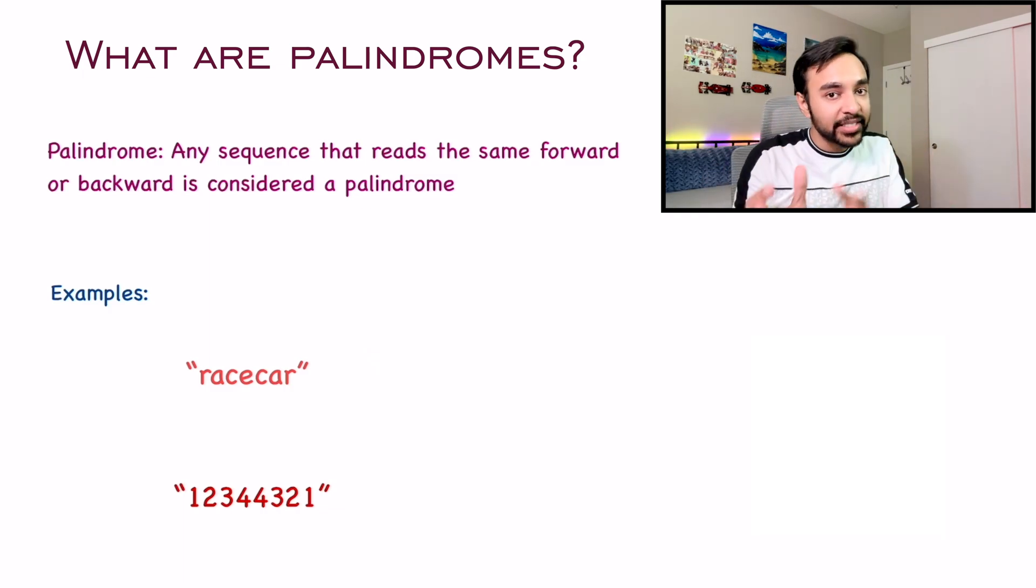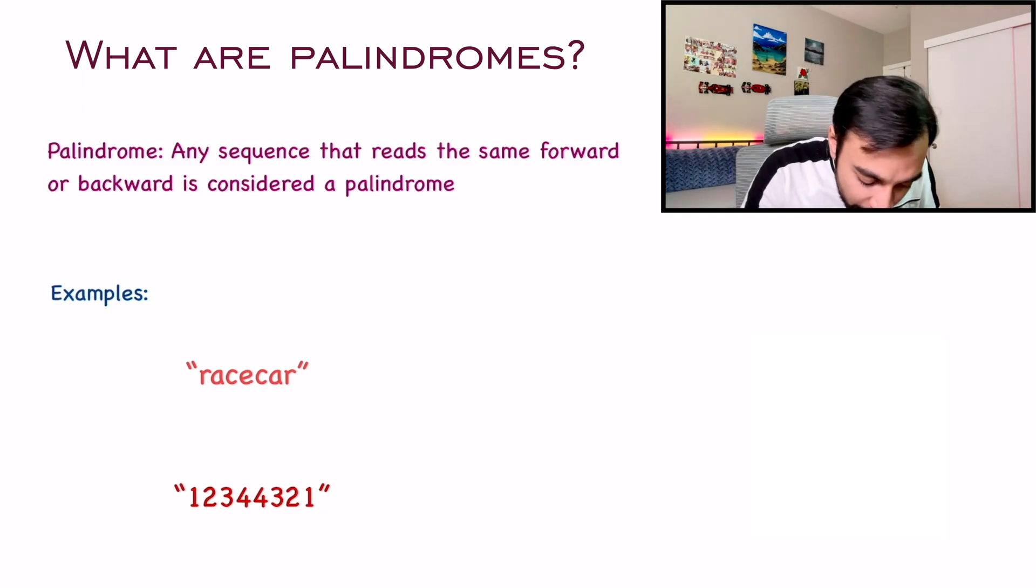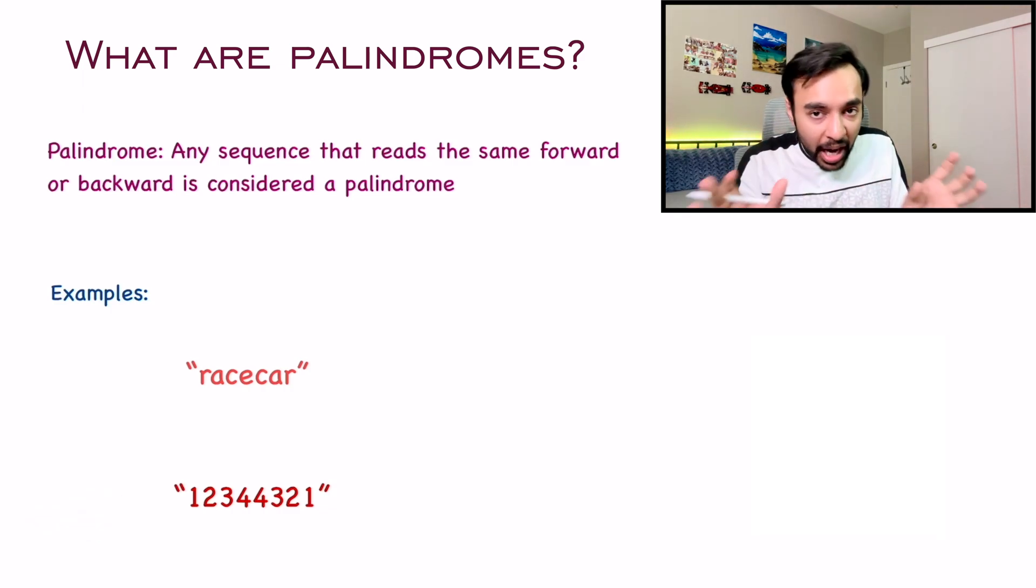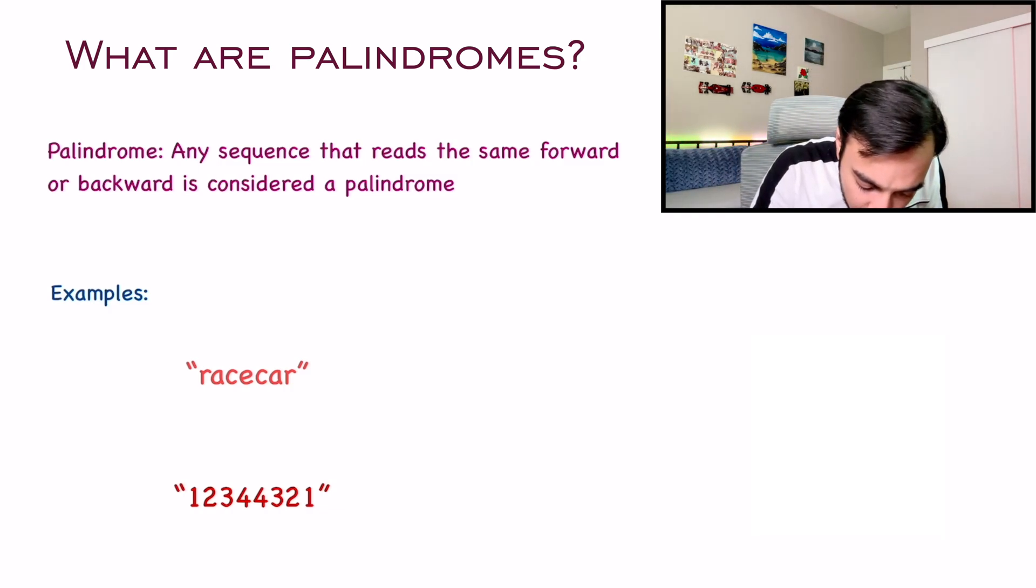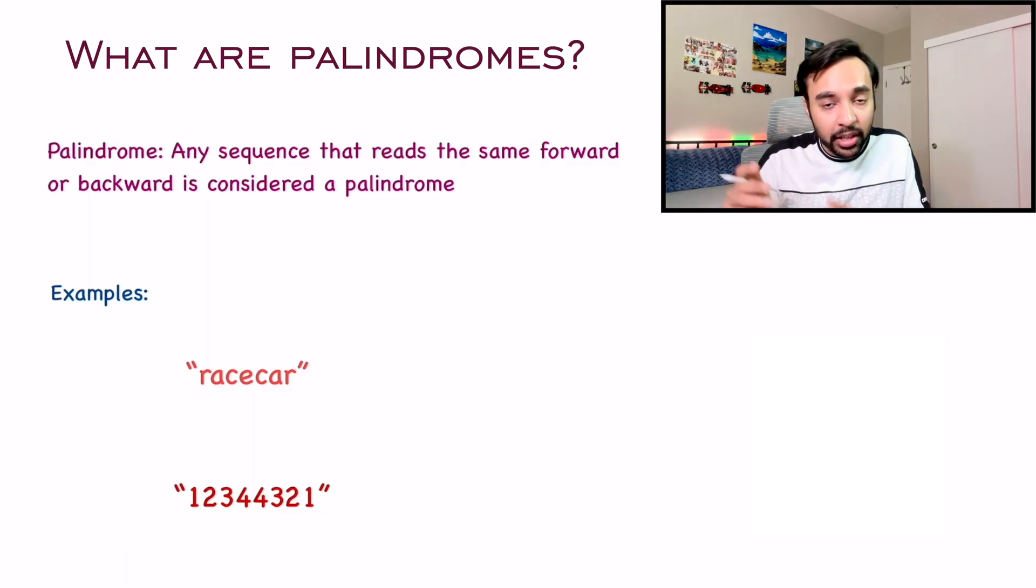It is not necessary that only strings can be palindromes. Numbers can be palindromes too. Take a look at the second example. You have this number. Now, if you try to read it from the left, what do you get? 1, 2, 3, 4 and then 4, 3, 2, 1.